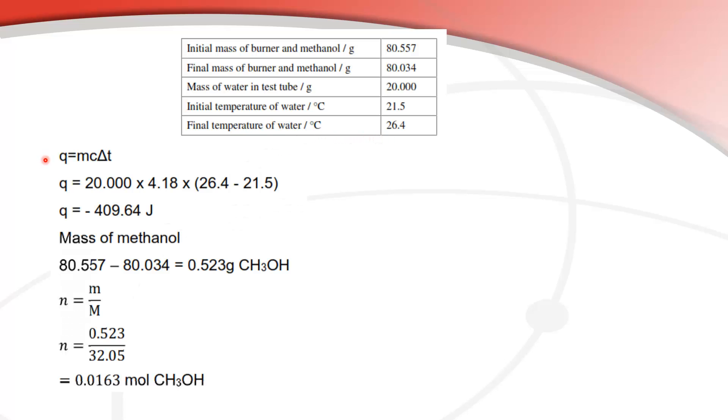So we'll use Q equals MC delta T. So we substitute in M. Now you have to be careful here. M is the mass of the water. A common mistake is for students to put the mass of the methanol in for M. It's the mass of the water.